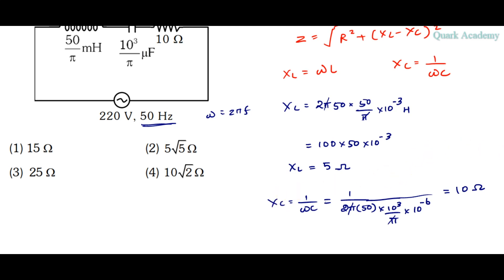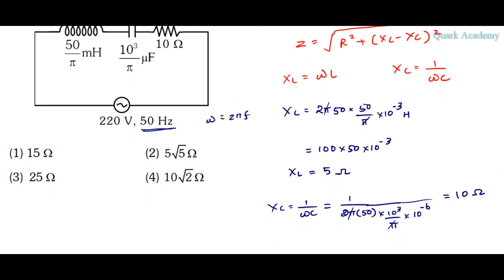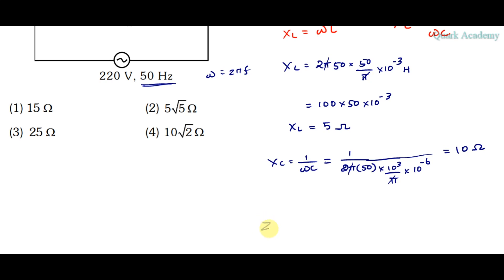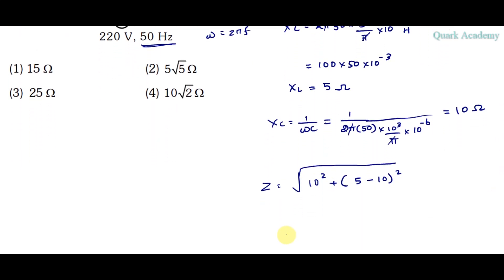Now we apply the impedance expression Z equals the square root of R² plus (XL minus XC)². So root of 10² plus (5 minus 10)². That's 100 plus 25, which is root of 125. This equals 5√5 ohm, so the total impedance of the circuit is 5√5 ohm.